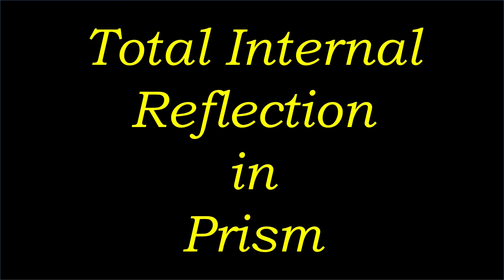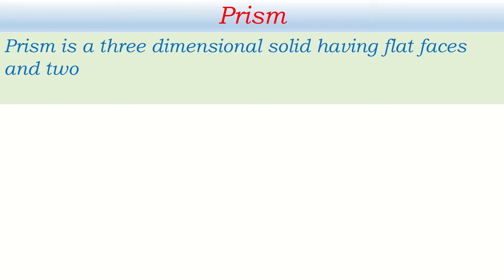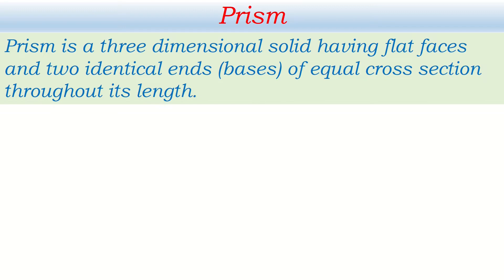Let's talk about total internal reflection in prisms, but first we must have a clear idea about what a prism is. A prism can be defined as a three-dimensional solid having flat faces and two identical ends called bases, with equal cross-section throughout its length. This definition has four key points: it is a three-dimensional solid, it has flat faces, it has two identical ends called bases, and it has equal cross-section area throughout its length.